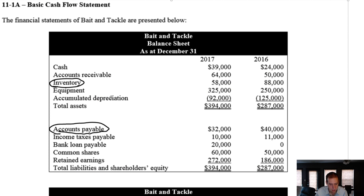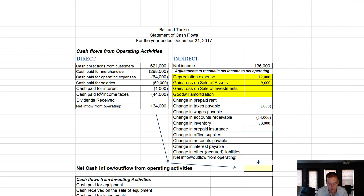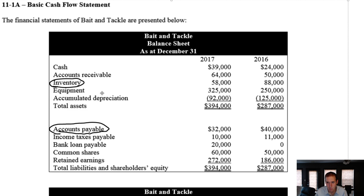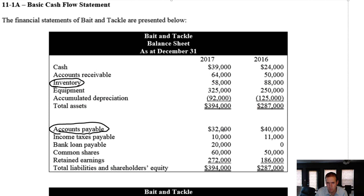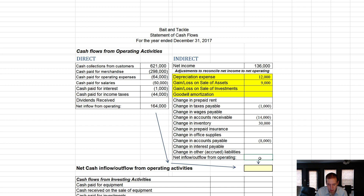There's no prepaid insurance in our assets. For accounts payable — it fell from $40,000 to $32,000. Accounts payable going down means we paid it, so that's bad for cash — cash goes down by $8,000. There's no interest payable, though we had interest expense. For other liabilities: accounts payable and income tax payable are dealt with. Our only other liability is a bank loan, which belongs in the financing section, not operating — it's a long-term debt activity.